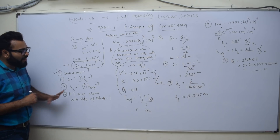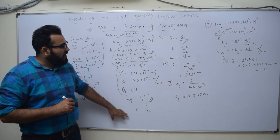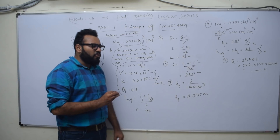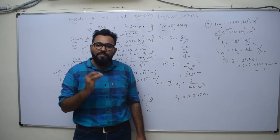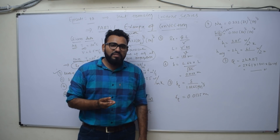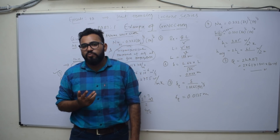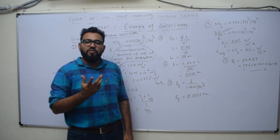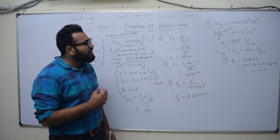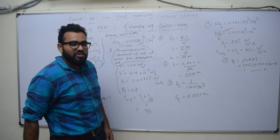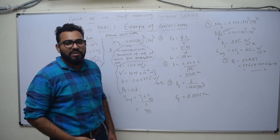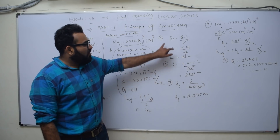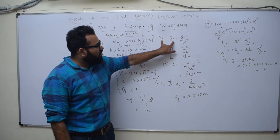So let's start. This was our complete given data. For any convection example, you need to remember all the dimensionless numbers — Reynolds, Prandtl, Nusselt — these are some basic numbers that will keep appearing. You can watch my previous episode where I explained these dimensionless numbers. The first convection episode covers these.